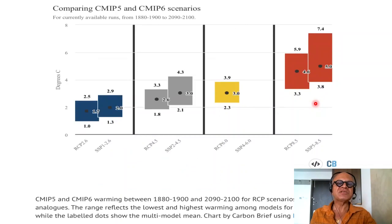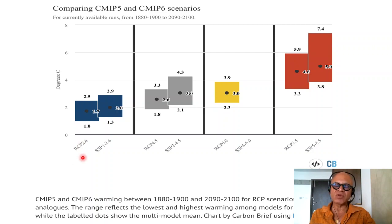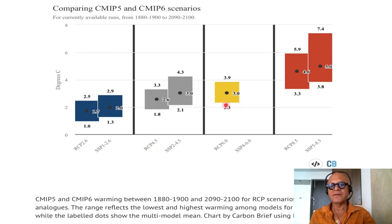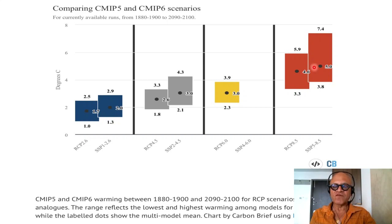Comparing CMIP-5 and CMIP-6 scenarios: RCP 2.6 is a benign scenario trying to keep global warming below 2°C by 2100 with 67% probability, corresponding to SSP1-2.6 in CMIP-6. For higher emission scenarios at 4.5, the range and mean are higher. SSP4-6.0 for CMIP-6 is not available, but RCP-6 and RCP-8.5 exist. For the business-as-usual scenario, CMIP-6 models project a much larger range of warming and a higher median of warming.